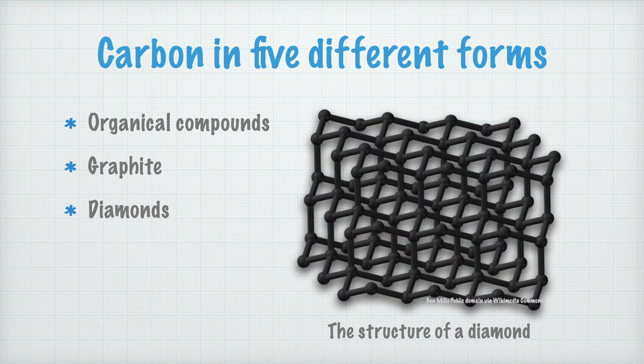In a diamond, which consists of pure carbon, every carbon atom binds to another four carbon atoms in the way that is shown in this picture here. This makes the diamond incredibly hard, and it's also the reason why diamonds are transparent.